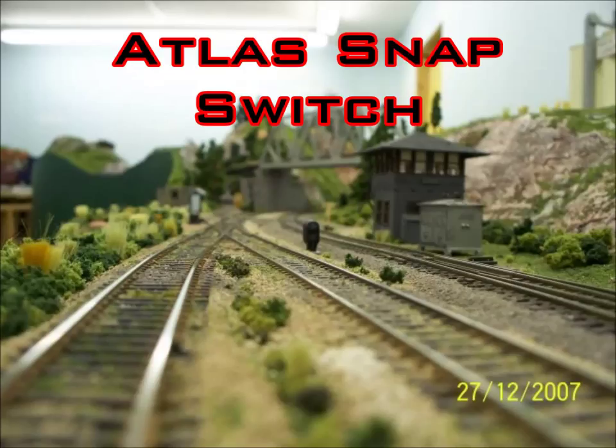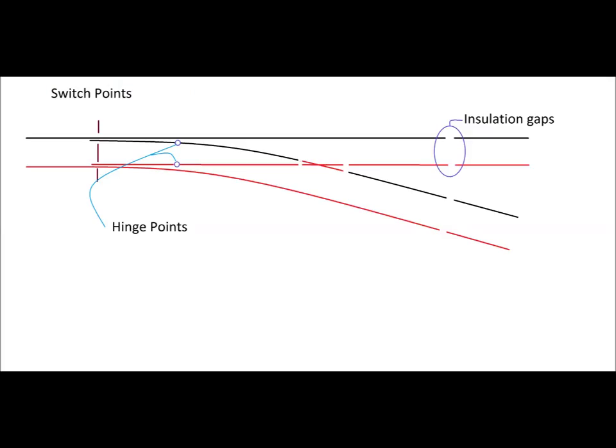I don't have an Atlas switch here in front of me so I had to draw a diagram here and just kind of bear with me for the crudity and roughness of it. You can use this with any switch, not just Atlas. You can see here I've got the switch points and the hinge points for the rails and my insulation gaps.